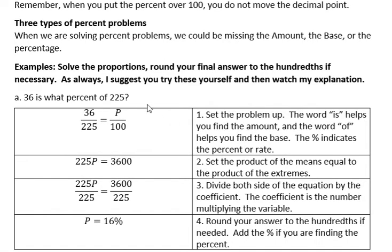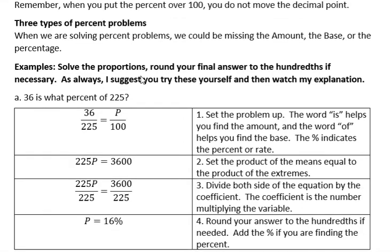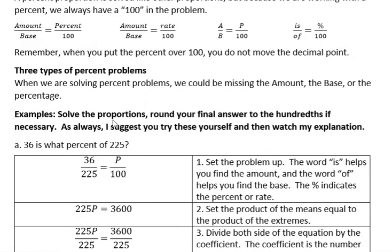The first: 36 is what percent of 225? Remember, we're always missing something, and in this case they're asking what percent. So what's the percent that we're missing? That means when I set this proportion up, my P is going to be the variable because I don't know the percentage. The other two things I'm going to use this little helpful thing with: the word 'is' helps you find the amount, and the word 'of' helps you find the base.